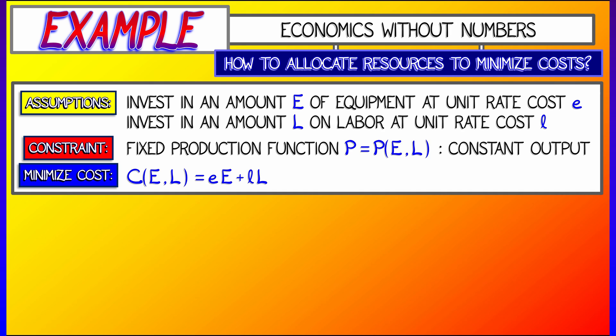Where the cost C is obviously the amount of equipment times the cost rate for equipment, plus the amount of labor times the cost rate for labor. That is little e, big E, plus little l, big L. Now, even though I don't know what that production function is, we're going to be able to do something with Lagrange.